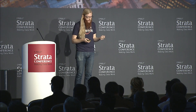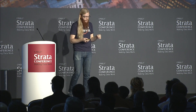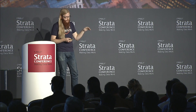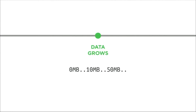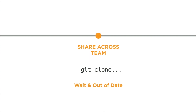Over time, your data grows and grows — and this isn't even big data yet. The data will accumulate and get bigger and bigger. If somebody else on your team wants to share that data, they'd have to clone it. But the problem with Git is that as soon as you clone it, there's already new data at the source, so you have to manually clone again. It's not designed as a real-time collaboration system, and that's unfortunate because you want data to be up-to-date all the time.